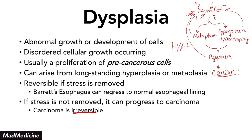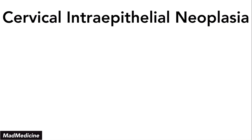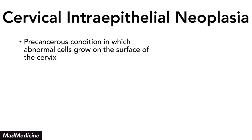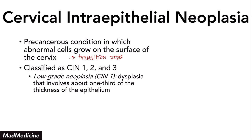One example you need to commit to memory is cervical intraepithelial neoplasia, also known as CIN. This is a very high yield topic you're going to see in this lecture, in OB-GYN lectures, and in cancer lectures. CIN is a precancerous condition in which you have abnormal growth of cells occurring at the surface of the epithelium of the cervix, at a location called the transition zone. CIN is classified as CIN 1, 2, and 3. CIN 1 is also known as low-grade neoplasia, and this type of dysplasia only involves one-third of the thickness of the epithelium of the cervix at the transition zone.